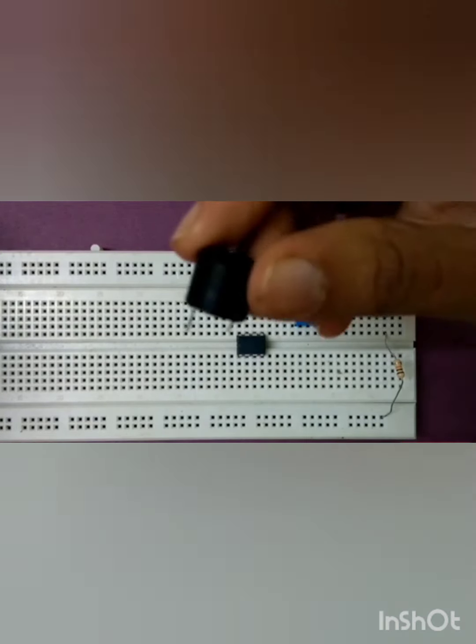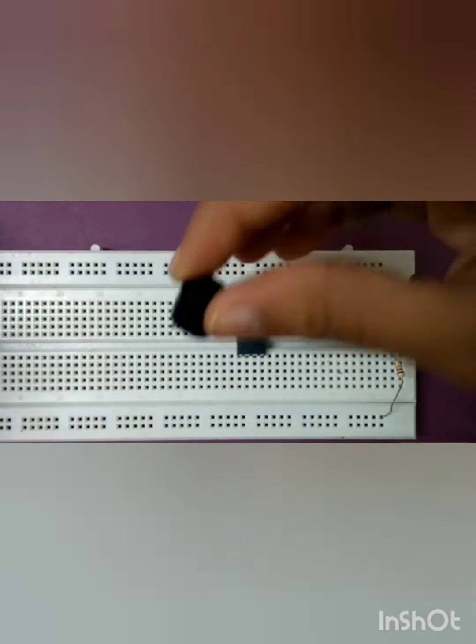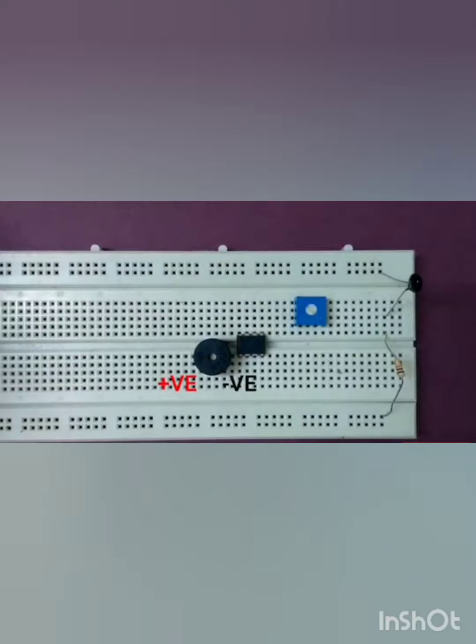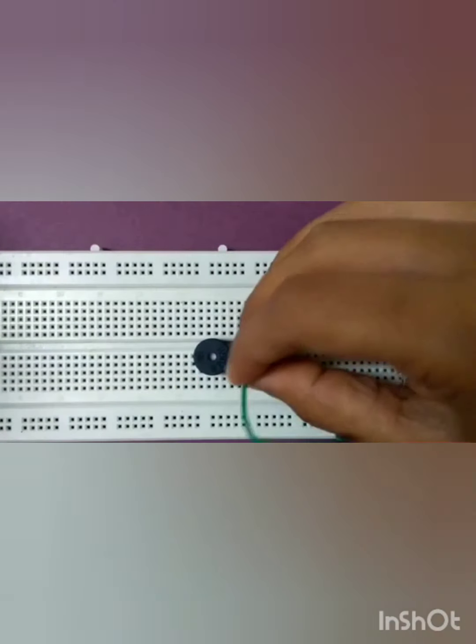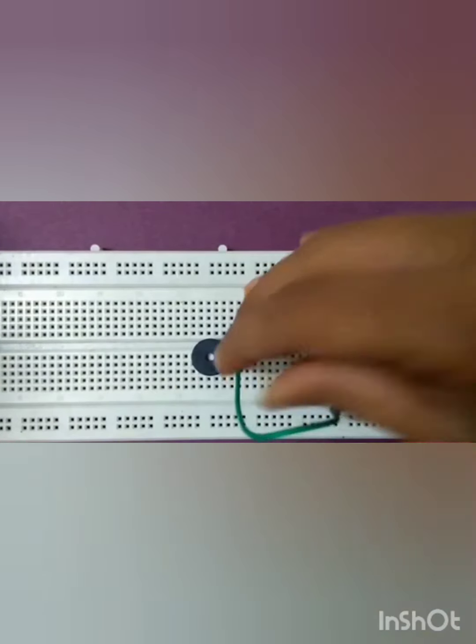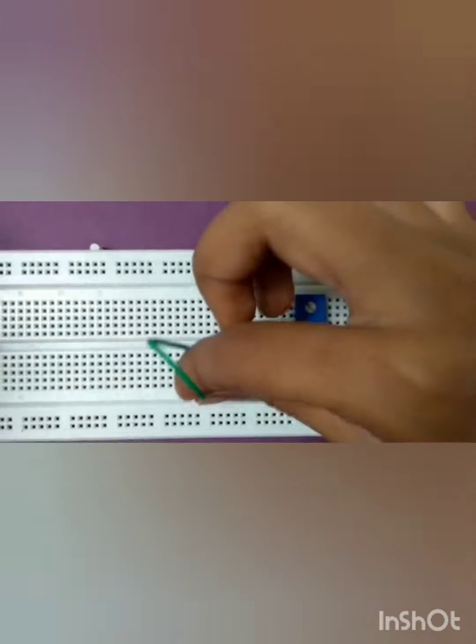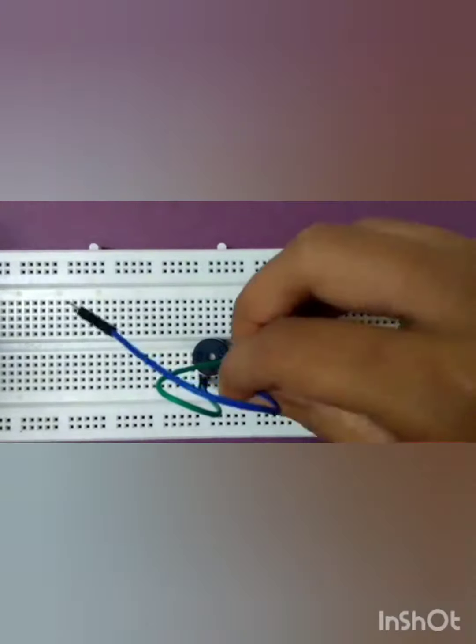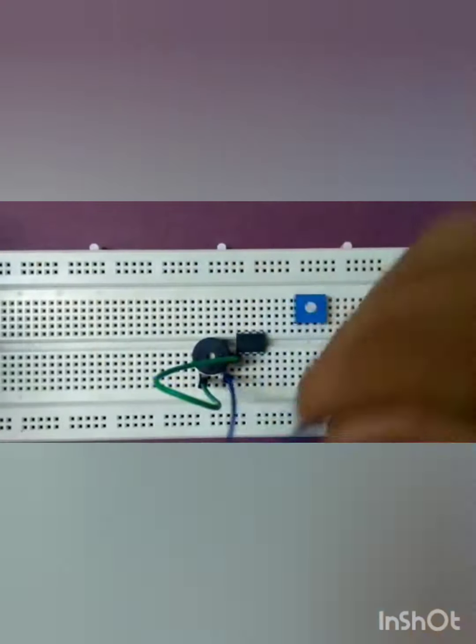And finally, we will connect the output which is our buzzer on the breadboard. Connect pin number 1 of the IC to positive terminal of the buzzer and the negative terminal of the buzzer to ground.